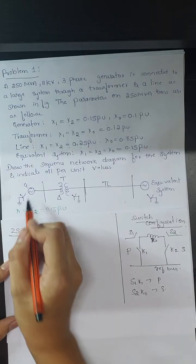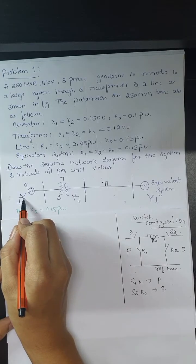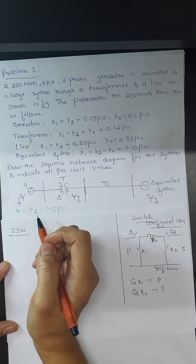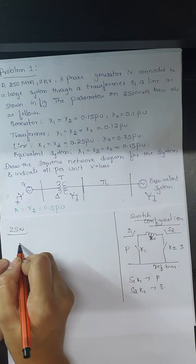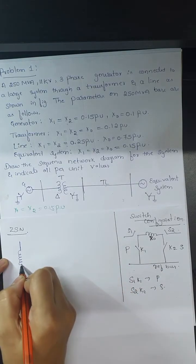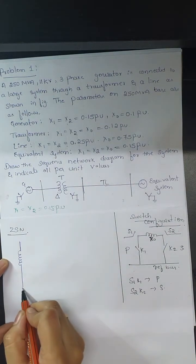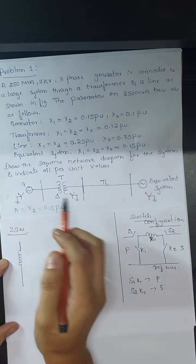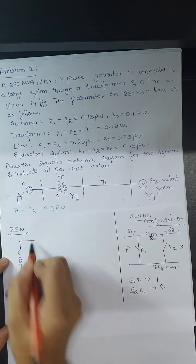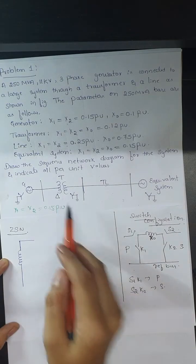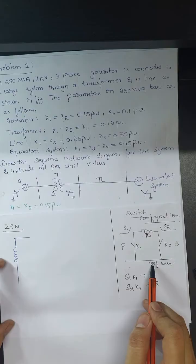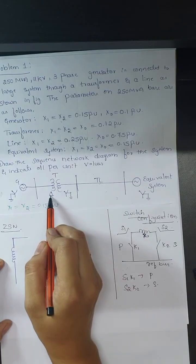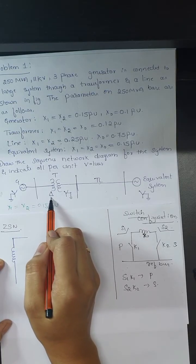For the generator, which is star connected with the neutral solidly grounded, we draw one reactance and show it with a straight line to the reference bus — indicating star connection with solidly grounded neutral, and no source voltage. For the transformer, we need to check the switch configuration. The primary side connection is delta.